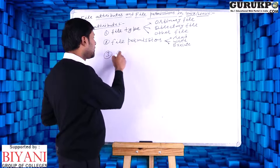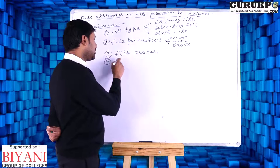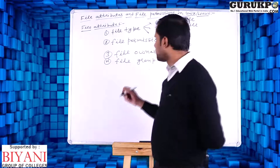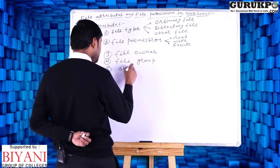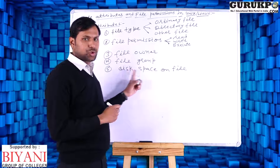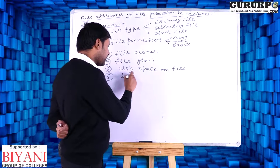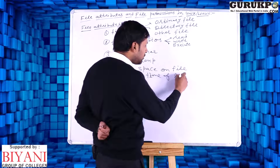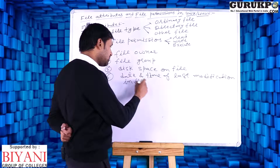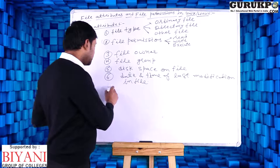Third is file owner — who creates the file. Fourth one is file group — in which group the owner of the file exists. Number fifth is disk space on file — how much space is occupied by the file on disk. Number six is date and time of last modification in file. Number seven is file name.